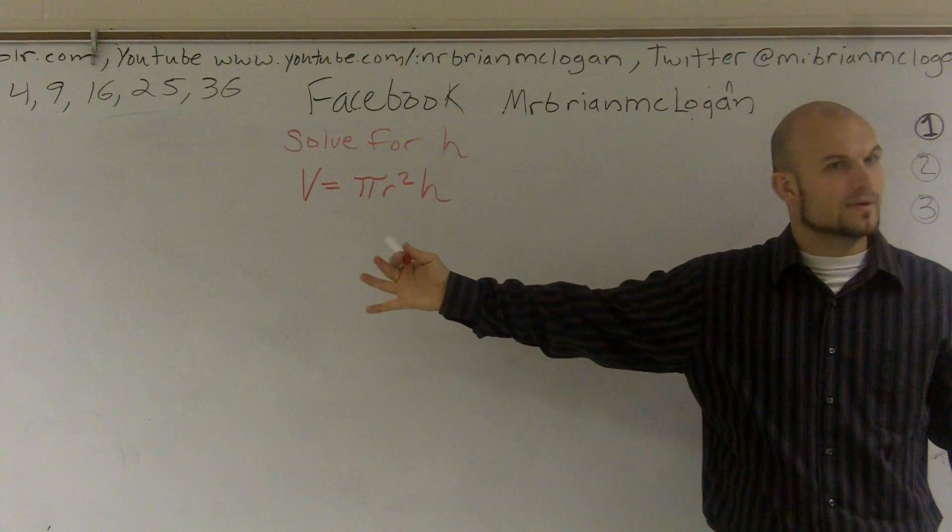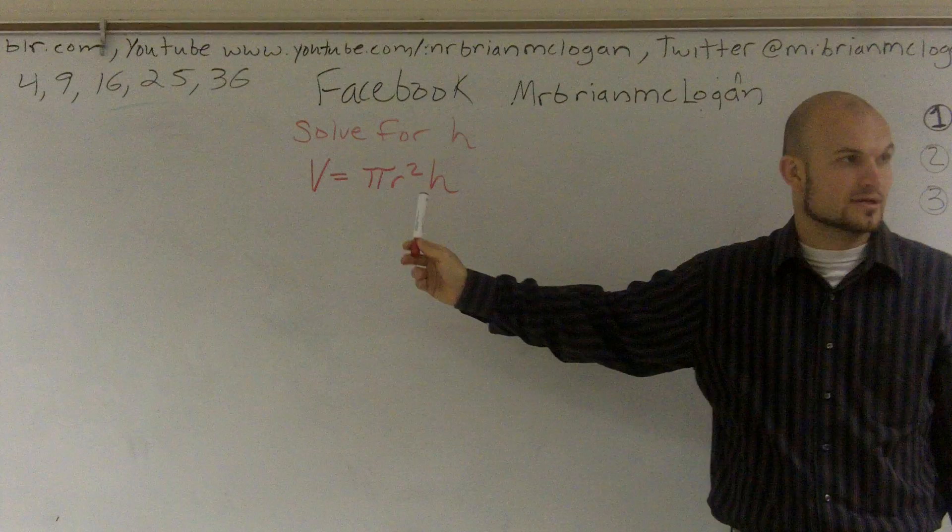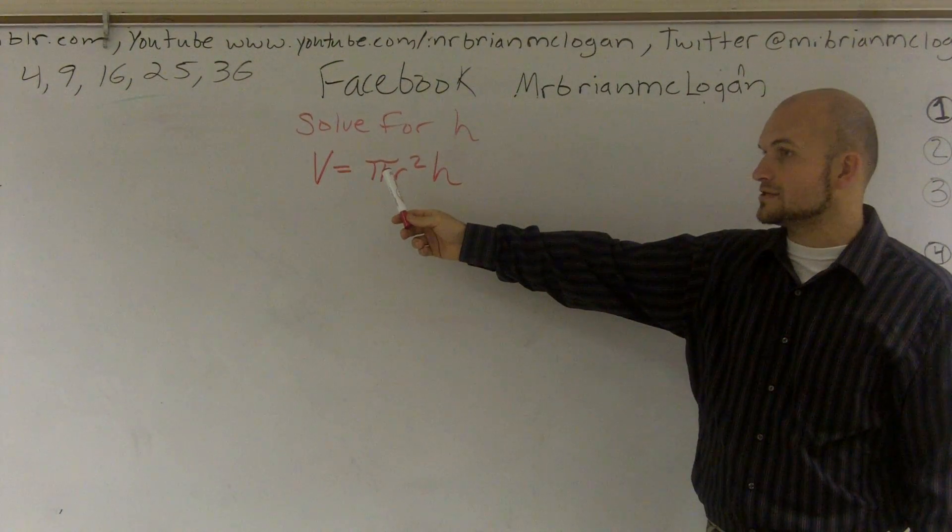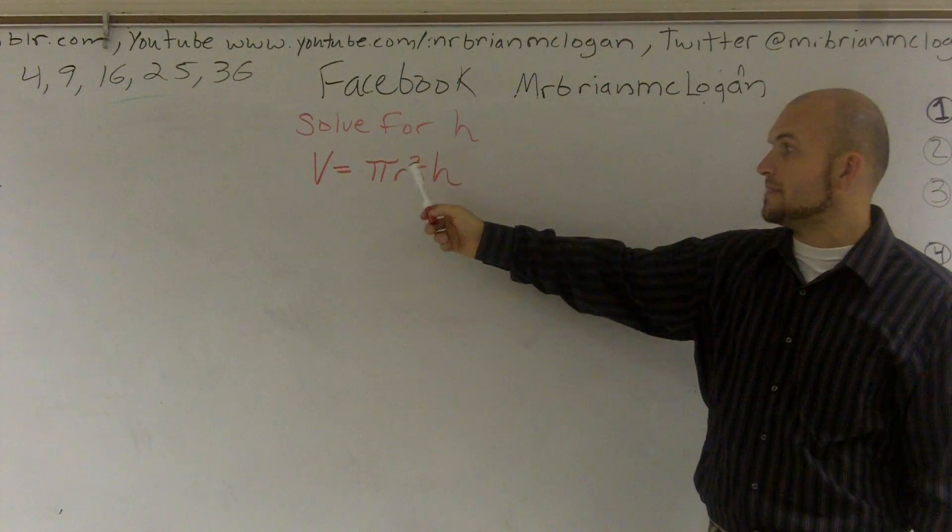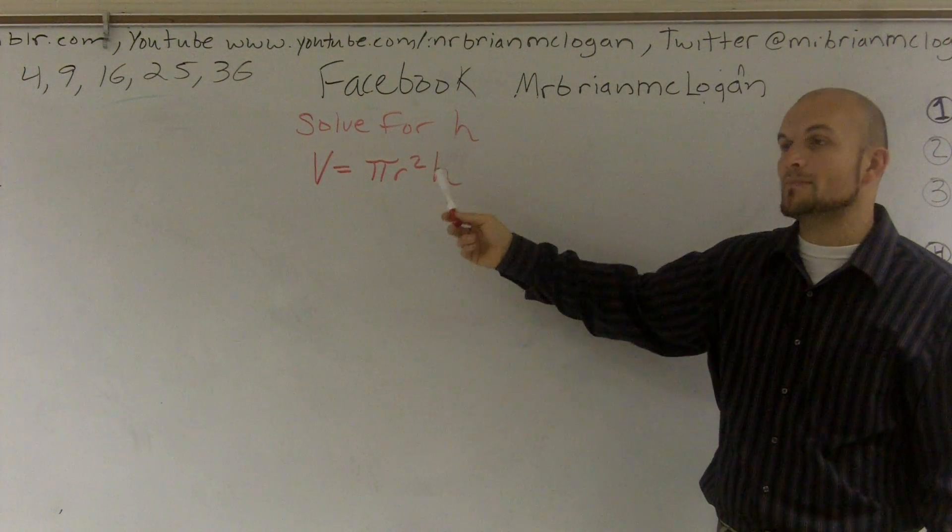So therefore, we know we have multiplication that's happening. So what we have is pi, which is a number, multiplied by r squared, multiplied by h.